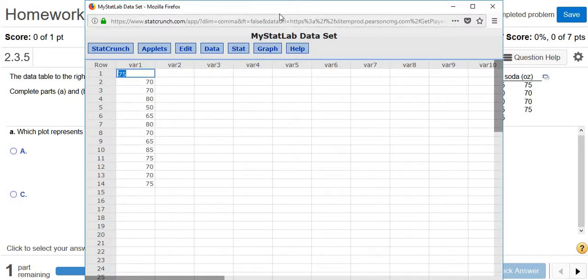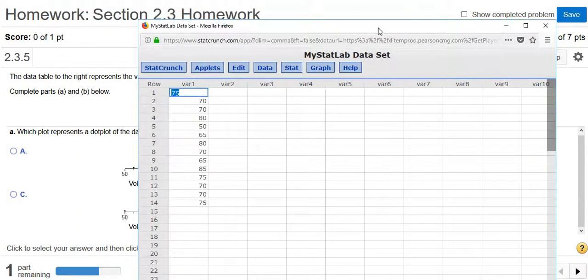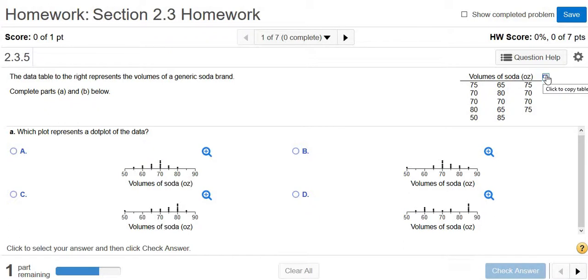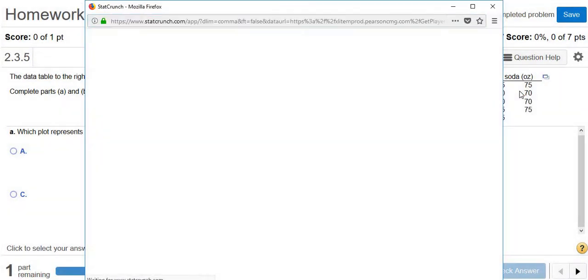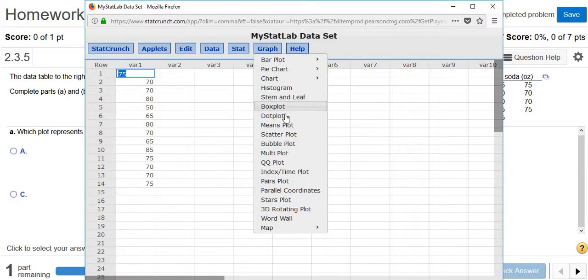So there it is, it types it in for us. So there's no possibility of actually typing things in incorrectly. A dot plot is a graph, so you go to graph dot plot. Let me do that again from scratch. You click this little box, open in StatCrunch, and then you go to graph dot plot.